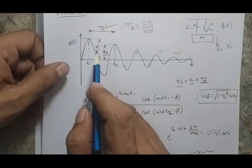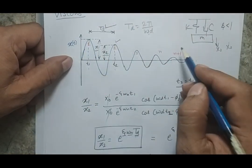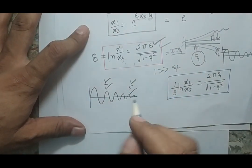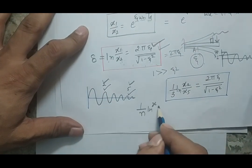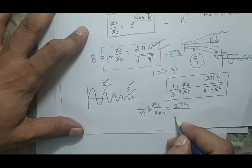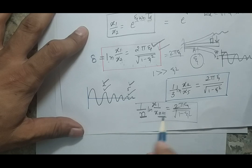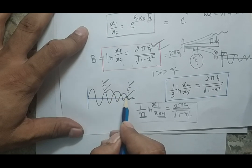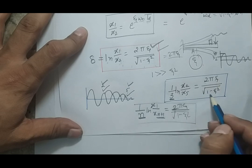Now, instead of taking the ratio of two successive peaks, suppose you want to take the ratio of non-successive peaks — for example, the second and fifth peaks. The formula then becomes: (1/n) · ln(x1 / x_{n+1}) = 2πζ / √(1 − ζ²). Please note: if you are comparing peak 2 and peak 5, you count the number of jumps between them — which is 3 — so n = 3.